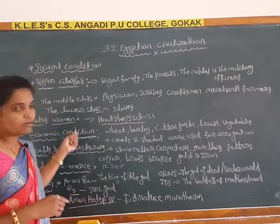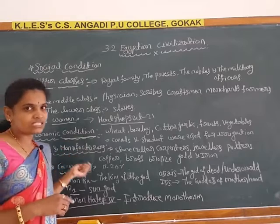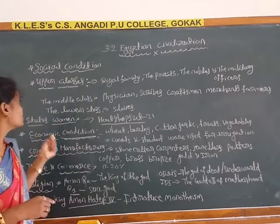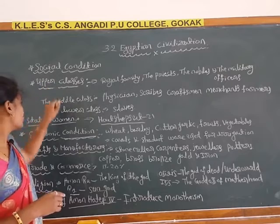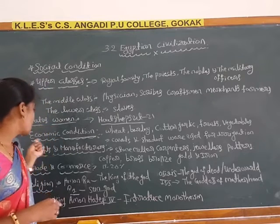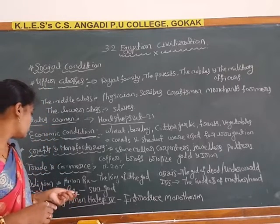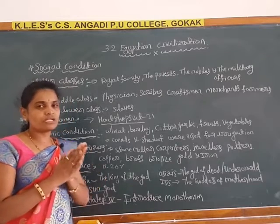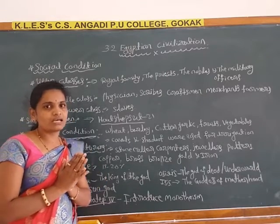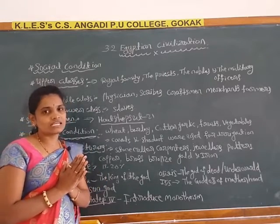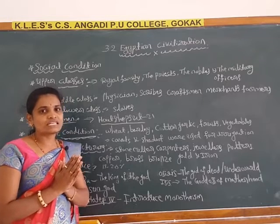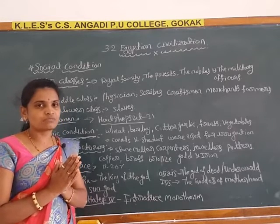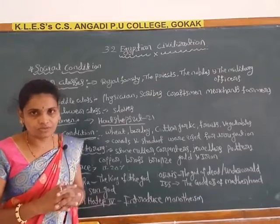So, in this class we discussed these all points: social conditions, status of women, economic conditions, trade and commerce, and religion. In the next class, we will discuss the literature and architecture of Egyptian civilization. Thank you.